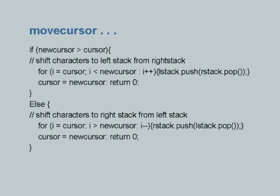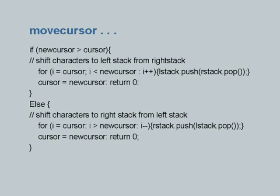Move cursor is very straightforward. I just check whether the cursor is within bounds; if not I give error messages. Otherwise, depending upon whatever is the cursor position relative to the new cursor position where I want to move, I will shift characters either to left stack from right stack or to right stack from left stack. The way the stacks are handled is hidden from us — it is part of stack.h — so as long as I use push and pop commands, I am comfortable that the commands will be executed properly.